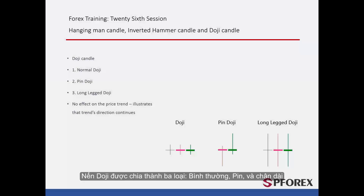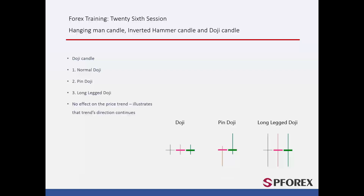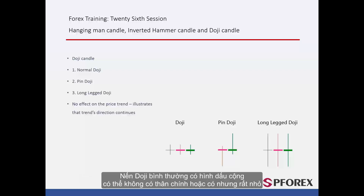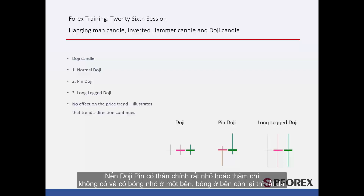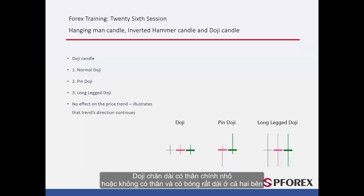Doji Candles are classified into three types: Normal, Pin, and Long Leg Doji. Normal Doji Candles have a cross or plus shape that may have no or tiny main body. Pin Doji Candles have a tiny or no main body with a small shadow on one side, while the shadow on the other side is considerably long. Long Legged Doji may have a minute or no main body, in addition to substantial long shadows on both sides.